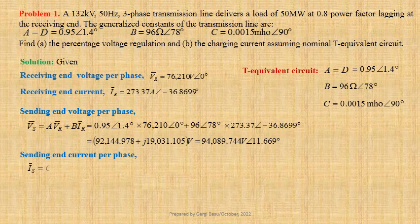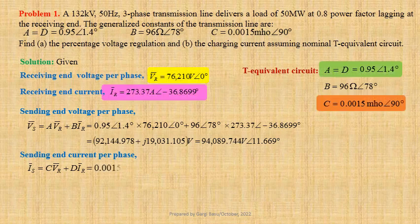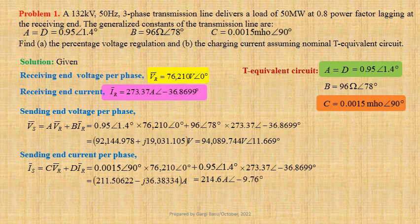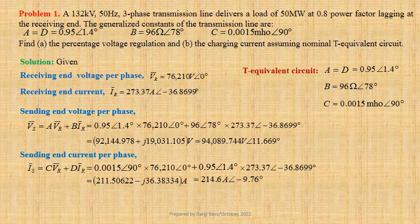Expression for sending end current per phase: IS equals C times VR plus D times IR. Using values we get 0.0015 at angle 90 degree into 76,210 at angle 0 degree plus 0.95 at angle 1.4 degree into 273.37 at angle minus 36.8699 degree. That gives us 211.50622 minus J times 36.38334 ampere, which in polar form is 214.6 ampere at an angle minus 9.76 degree.